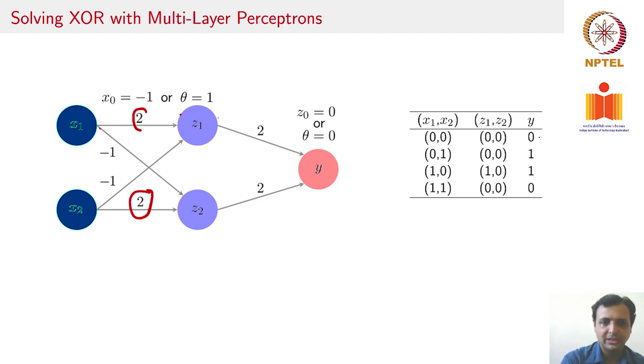You have the weights denoted on each of these connecting edges and the bias given to be minus 1. Let us take a couple of cases from the truth table. If you have (0,0) as input, Z1 would get an input minus 1. Since it is a perceptron and its input is negative, it would give an output 0. You get exactly the same output for Z2. Which means Y gets 0, so the output is 0.